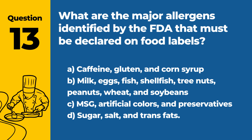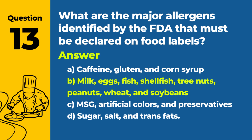Question 13: What are the major allergens identified by the FDA that must be declared on food labels? a. Caffeine, gluten, and corn syrup. b. Milk, eggs, fish, shellfish, tree nuts, peanuts, wheat, and soybeans. c. MSG, artificial colors, and preservatives. d. Sugar, salt, and trans fats. Answer: b. Milk, eggs, fish, shellfish, tree nuts, peanuts, wheat, and soybeans. These are the major allergens identified by the FDA that require declaration on food labels.